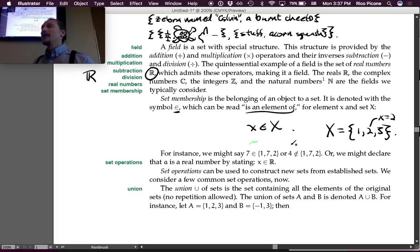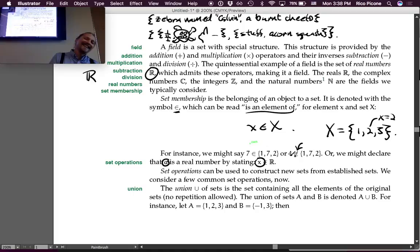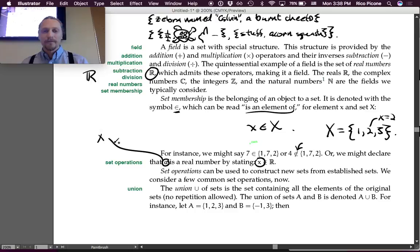For instance, we might say that 7 is an element of the set {1, 7, 2}. Or we might say that 4 is not an element of the set {1, 7, 2}, because 4 didn't show up in there anyway. Or we might declare that X is a real number by stating X is an element of the reals.